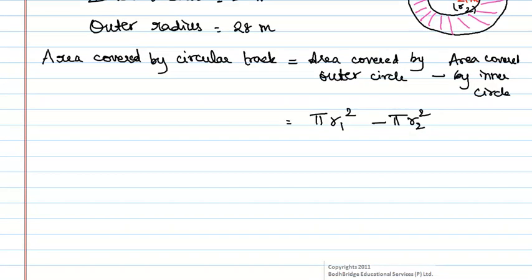Which is equal to pi of 28 square minus pi of 21 square. Taking pi as common, we will get 28 square minus 21 square of pi.